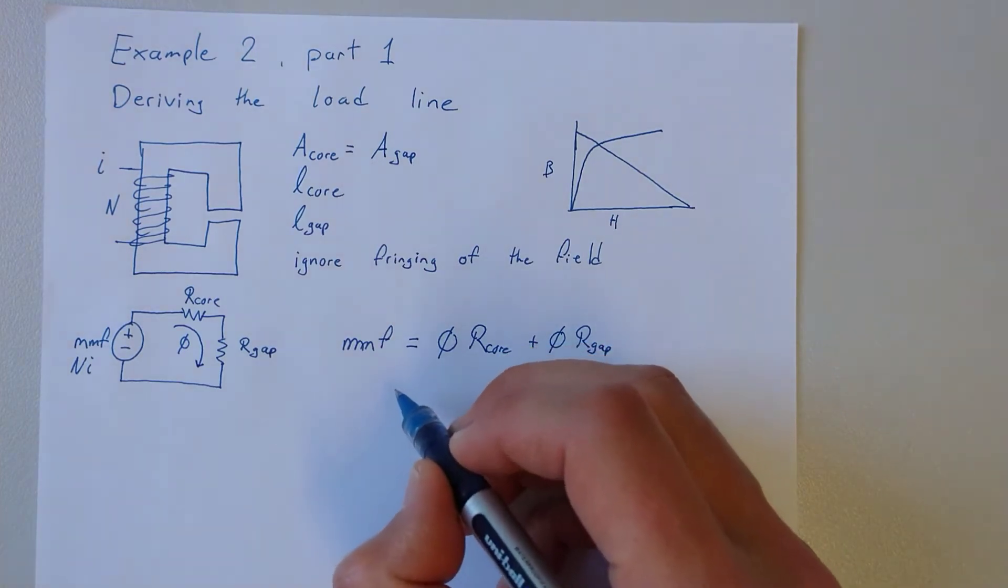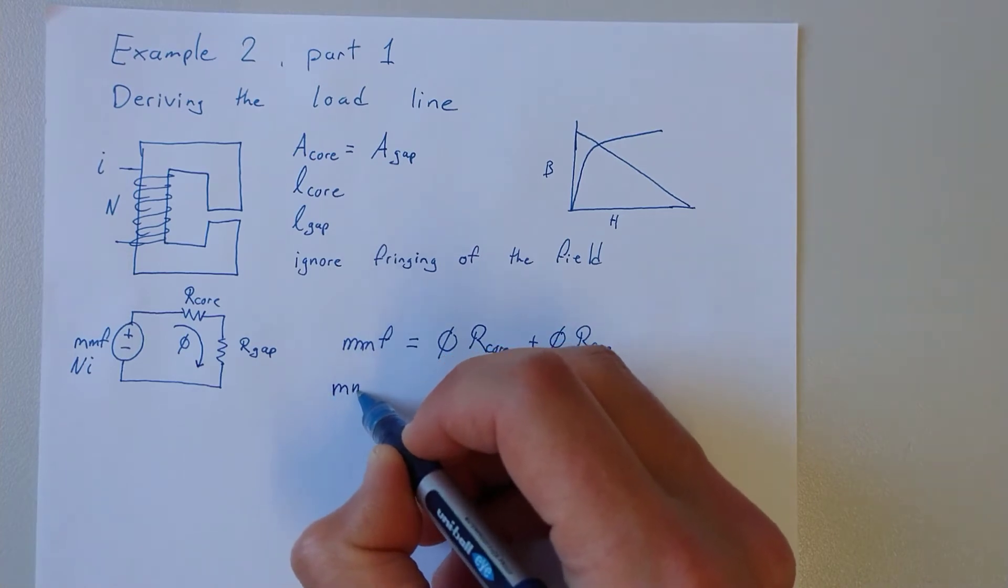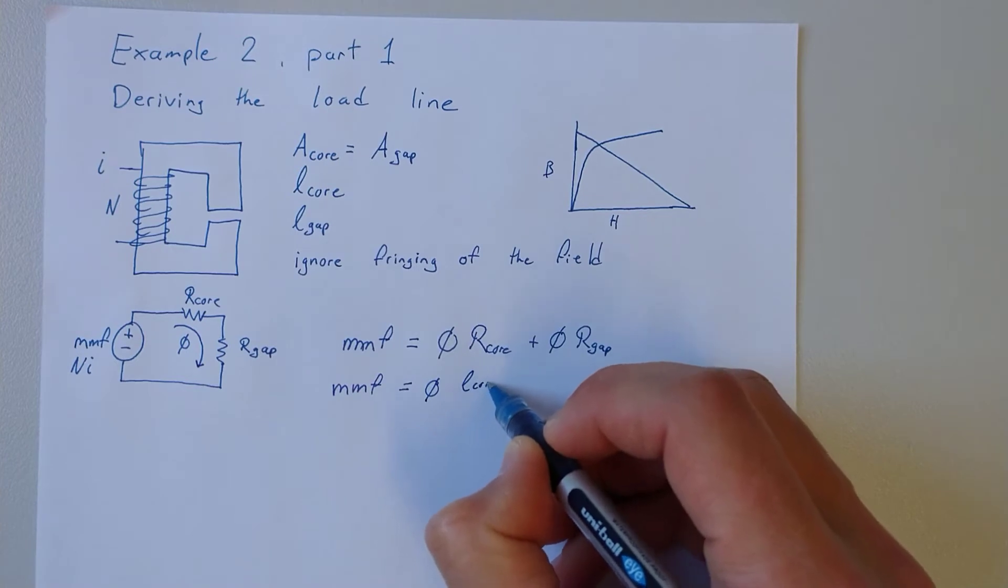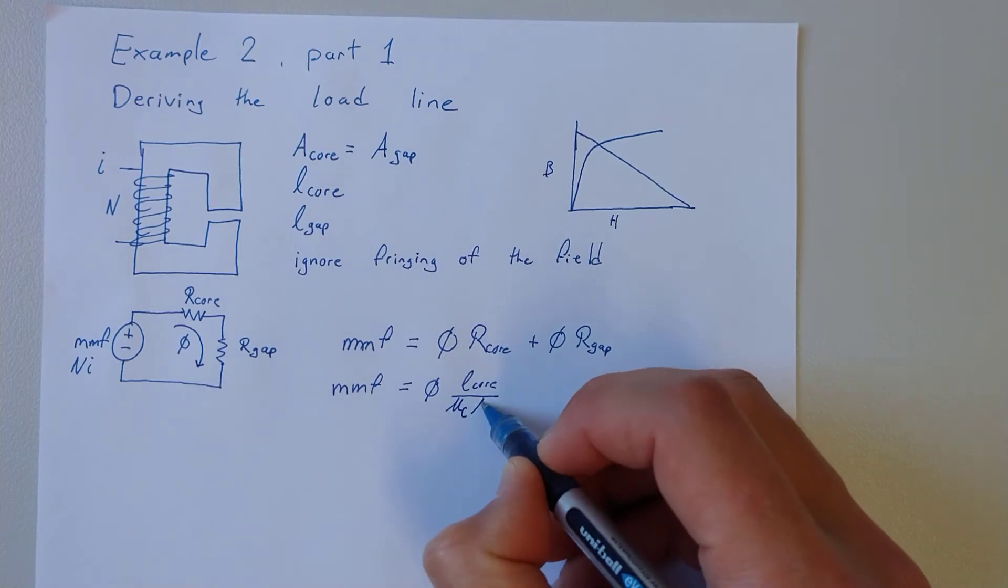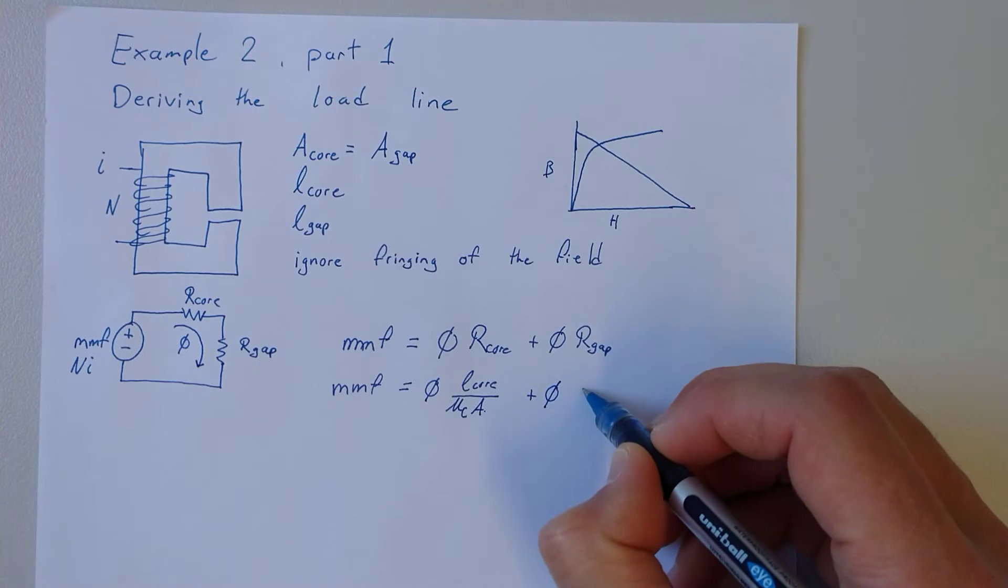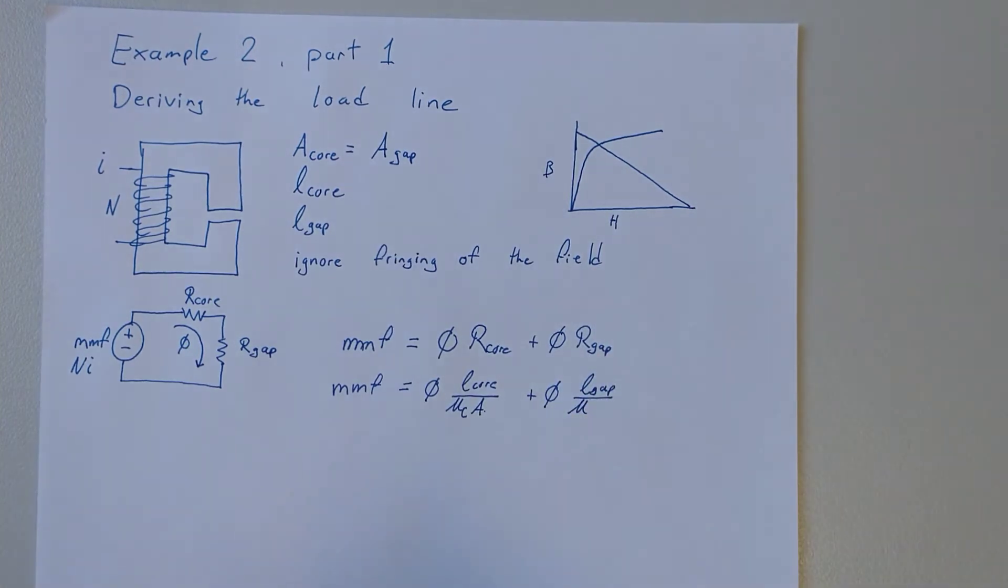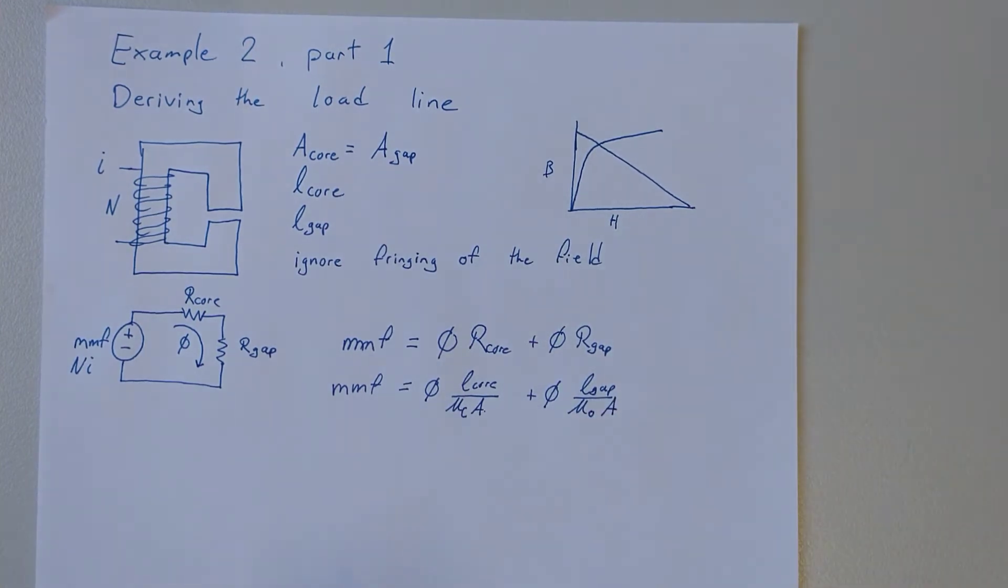We can expand this a little bit using formulas from the previous example to say the magnetomotive force is equal to flux times the length of the core over the permeability of the core times the area plus flux times the length of the gap over the permeability of the gap. The permeability of the gap is mu naught because it's air and areas are the same so we've dropped the subscript on area.